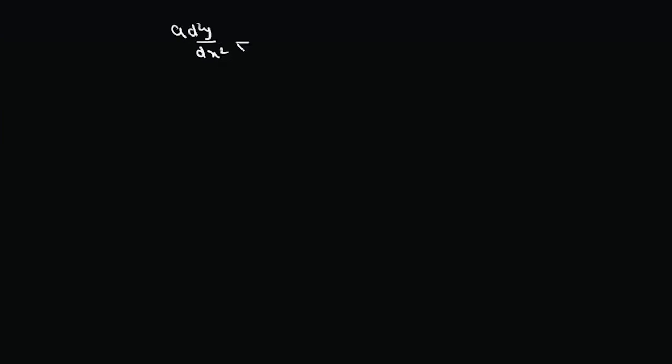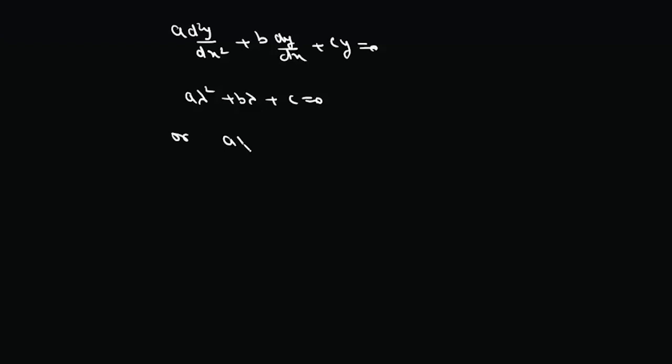We'll generalize the concepts learned in solving second order differential equations to higher order differential equations with constant coefficients which are homogeneous. In second order differential equations, we changed the equation a d²y/dx² plus b dy/dx plus c y equals 0 into the characteristic equation by writing it as a λ² + b λ + c = 0, or in differential operator form as (aD² + bD + c)y = 0, where this itself is its characteristic equation.